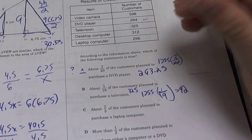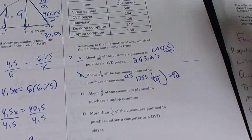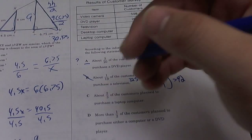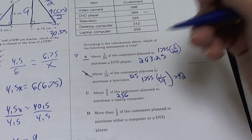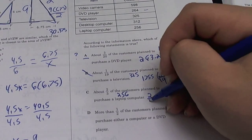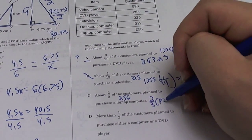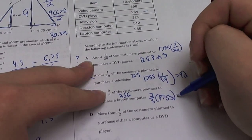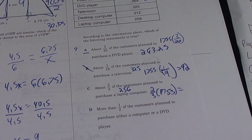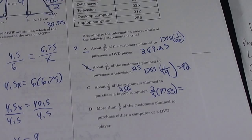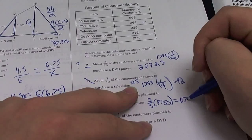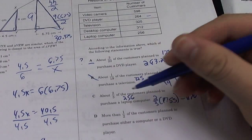Two-thirds of the customers plan to purchase laptop computers. Laptops is 256. So you do 2/3 times 1755, and you get a really big number, 1170, which is nothing close to 256.